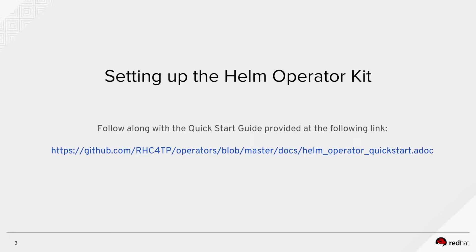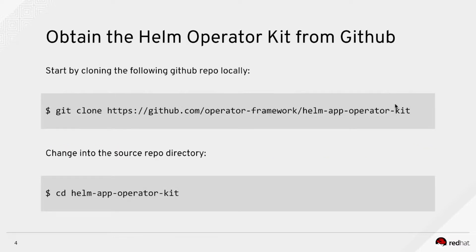We'll begin with setting up the Helm operator kit. As with the MiniShift presentation, we have a quick start guide provided for you to follow along at github.com/RHC4TP in the operators repository, under the docs subdirectory — open the Helm operator quick start guide. We'll start by obtaining the Helm operator kit from GitHub, cloning that repository, and then changing into the repository's base directory.